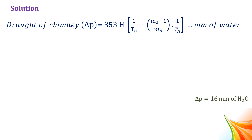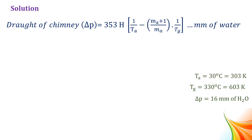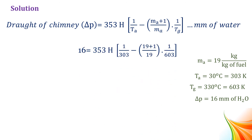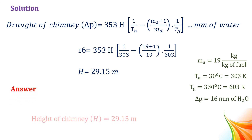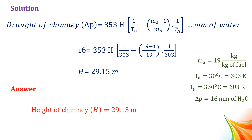In our problem, ΔP = 16 mm of water, flue gas temperature = 603 Kelvin, atmospheric temperature = 303 Kelvin, and mass of air Ma = 19 kg per kg of fuel. Substituting these values into the equation, we get H = 29.15 meters. So the height of the chimney H is equal to 29.15 meters.